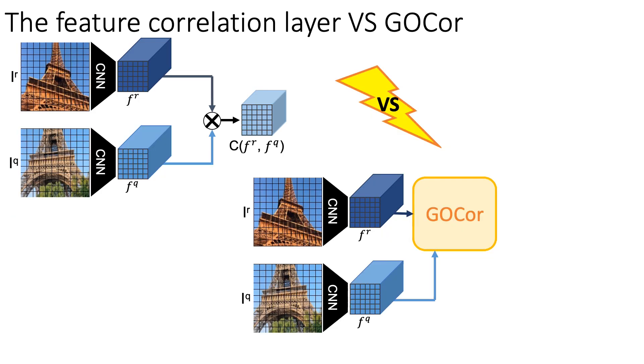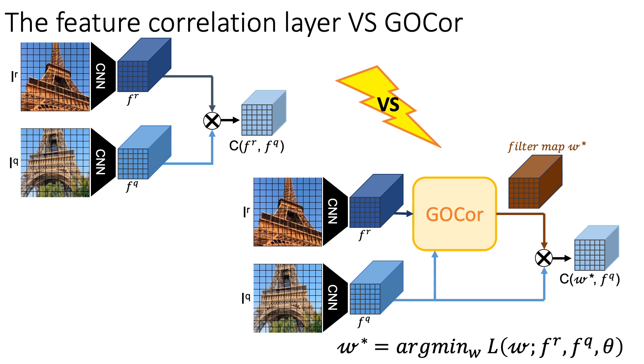In this work, we propose GoCore. In GoCore, we generate a tensor W that we call the filter map. The filter map is then applied to the query features to obtain the final correspondence volume. W results from an internal optimization procedure, minimizing an objective function during inference.